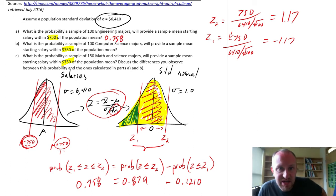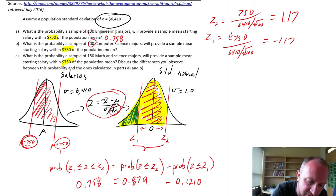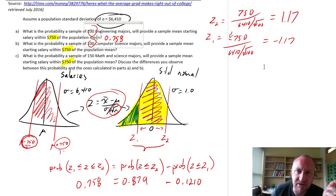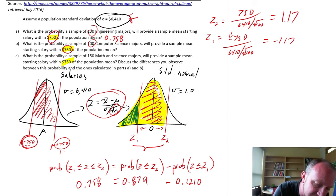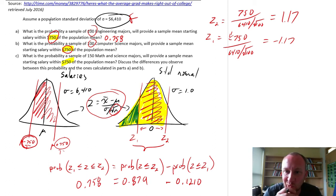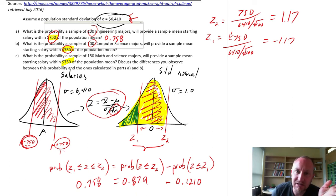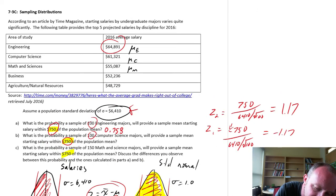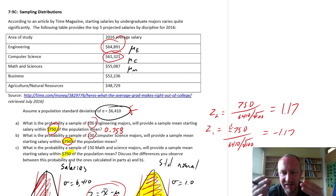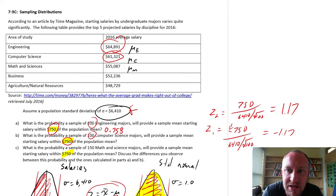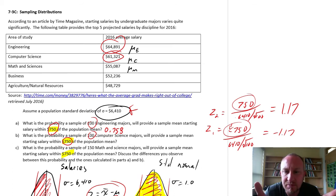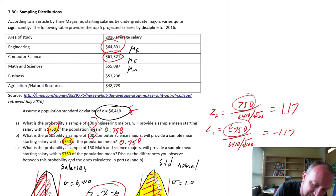Notice that for parts A and B there's nothing about this question that's going to change. My sample size is the same — 100 computer science students versus 100 engineering majors — my standard deviation is the same (6410), and I'm looking for a distance of $750 from the mean. It actually doesn't matter what the population mean is; what we're looking for is how accurate will we be, and our proximity of interest is $750. So our answers are going to be exactly the same for parts A and B.